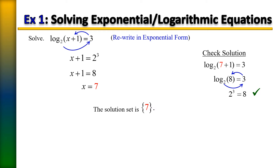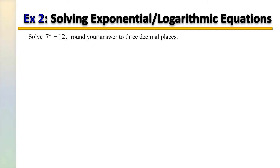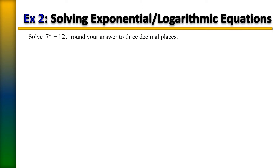Here we have an exponential equation. The first thing you want to do is see if you can rewrite the equation so they have common bases. If so, you could use the equality property and bring the exponents down. But since we can't create common bases with 7 and 12, we need another approach.